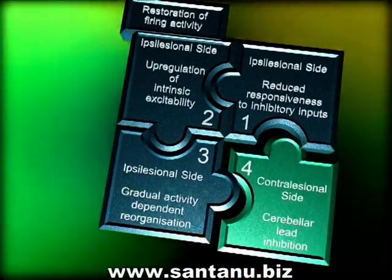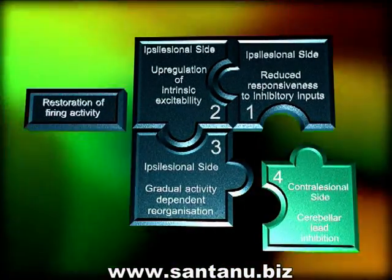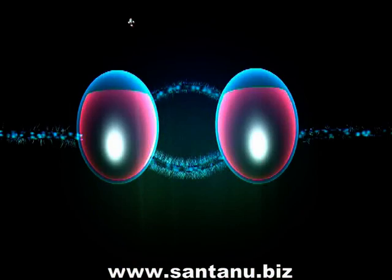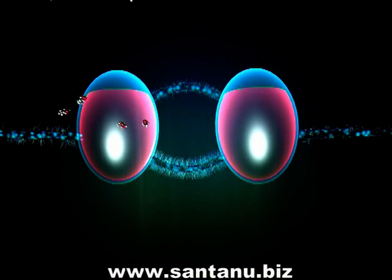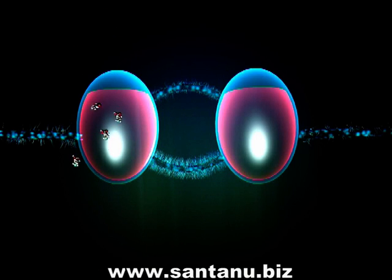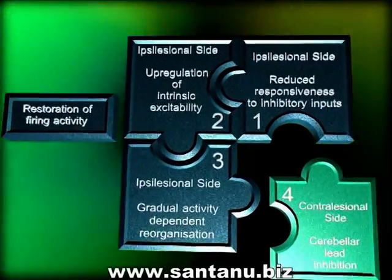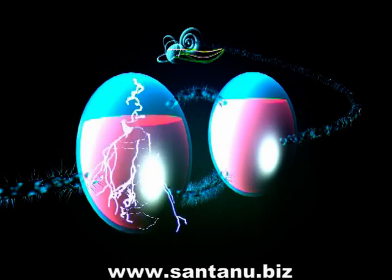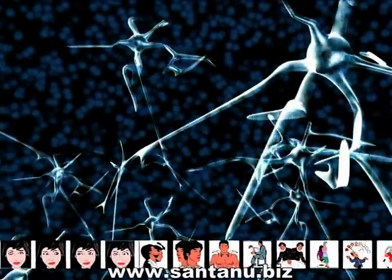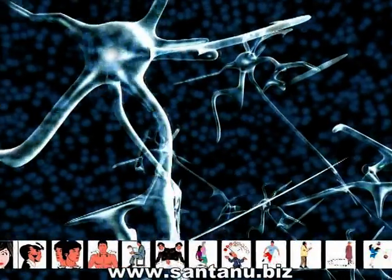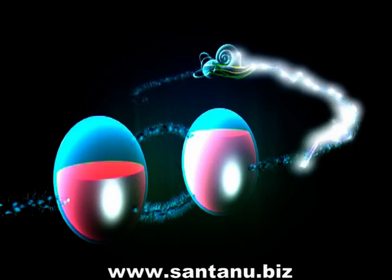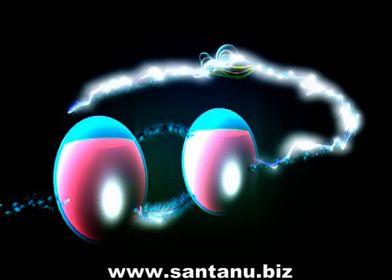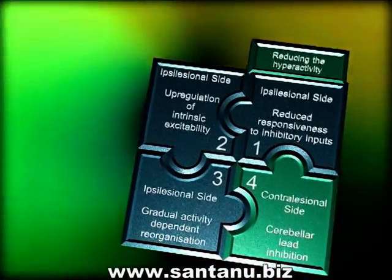Mechanisms involved in restoration of firing activity in ipsilesional hypoactive vestibular nucleus: Glycine and GABA are the inhibitory neurotransmitters of the commissural system. At the ipsilesional vestibular nucleus, downregulation of GABA and glycine receptors results in decreased responsiveness to inhibitory inputs from the contralesional vestibular nucleus. There is upregulation of intrinsic electrophysiological excitability of ipsilesional vestibular nucleus neurons, and gradual activity-dependent reorganization of synaptic connectivity. As a result, ipsilesional vestibular nuclei neurons start receiving inputs from the contralesional side.